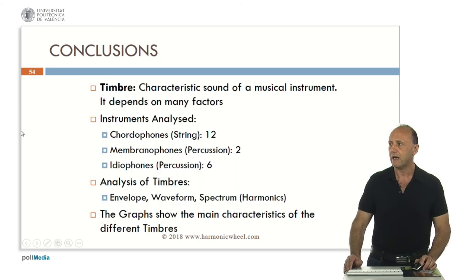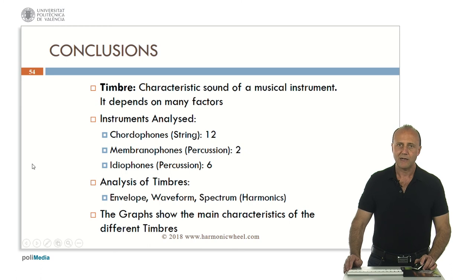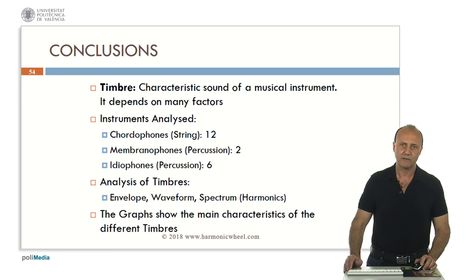As conclusions, the timbre is the characteristic sound of a musical instrument and it depends on many factors. In this presentation, we analyzed the chordophones or string instruments — twelve examples — membranophones, which are percussion instruments — two examples — and the idiophones, which are also percussion instruments, with six examples. To analyze the timbre, we considered the envelope, the waveform, and the spectrum — that is, the harmonics. These graphs show the main characteristics of the different timbres. You can find all the information on the web page harmonicwheel.com. Thank you very much for your attention.